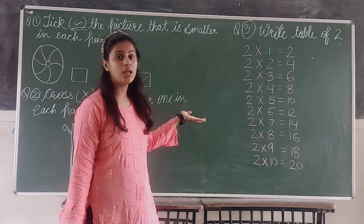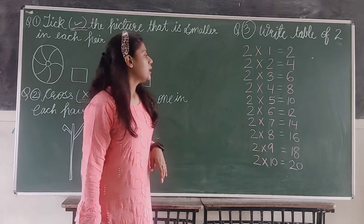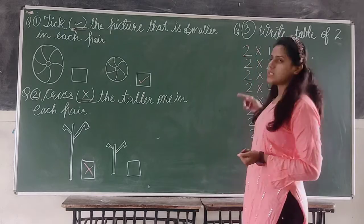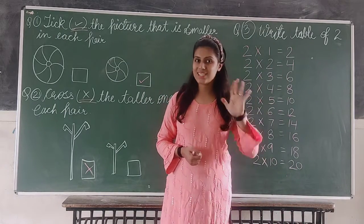Okay. What we have done? Table of 2. Then we have written this. Okay. Now you have to complete these 3 questions in your copy and send it to the group. Okay. So thanks. Bye-bye.